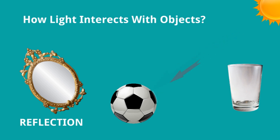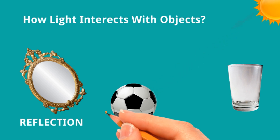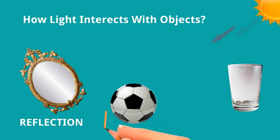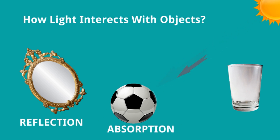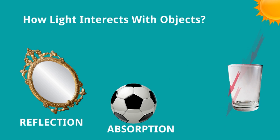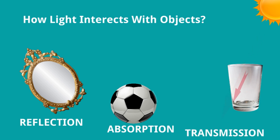For the football, light is falling on it and the football is absorbing all the rays, so no light rays come back — the entire light is absorbed by the football, so it is absorption. For the glass, light is passing through — there is no reflection, it simply passes through — so it is transmission.